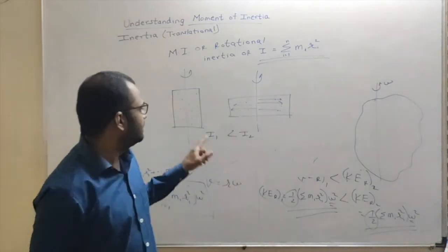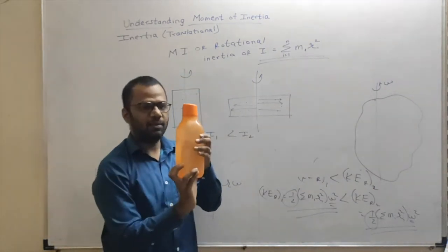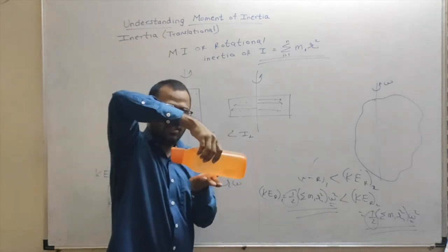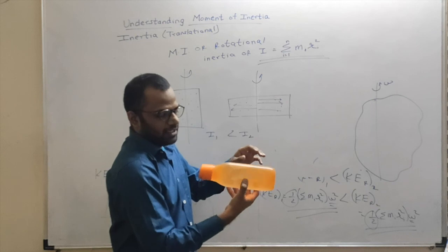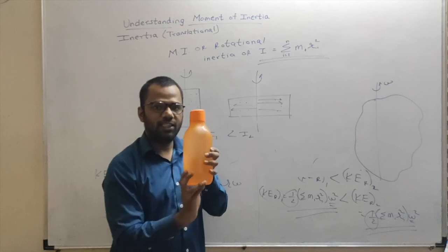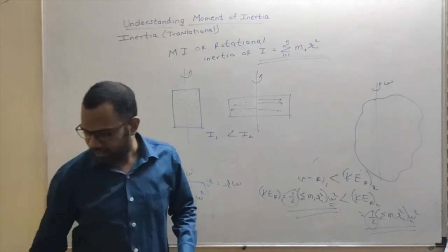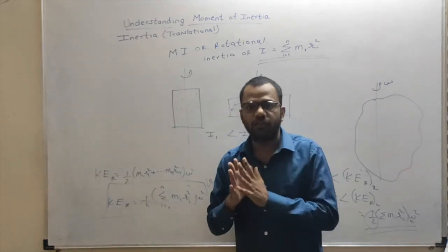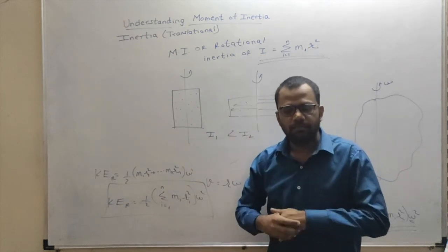So moment of inertia also depends on how your axis of rotation is positioned. For the same body, rotating it about one axis may be more difficult than rotating it about another axis — about one axis of rotation it is more difficult to rotate, and about the other axis it becomes easier. You can feel this in your own hands. I hope you have understood moment of inertia, also called rotational inertia, simply denoted by the letter I.